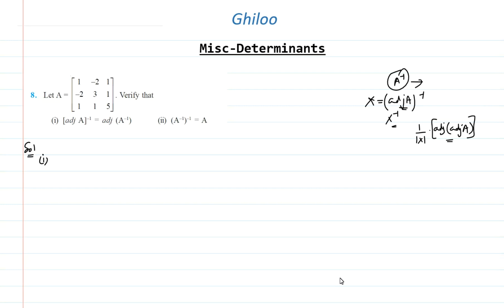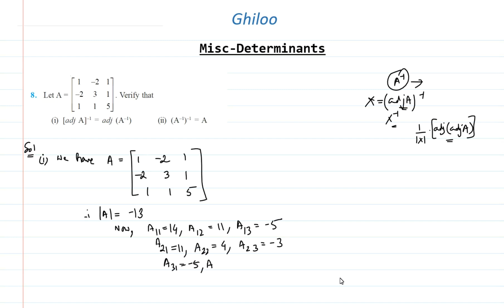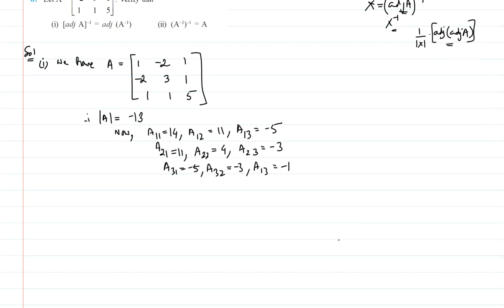So first we have the determinant of A, which is equal to minus 13. Now I am just writing the cofactors of A. After finding the cofactors of A, I'll be finding A inverse, so for that I need adjoint of A.